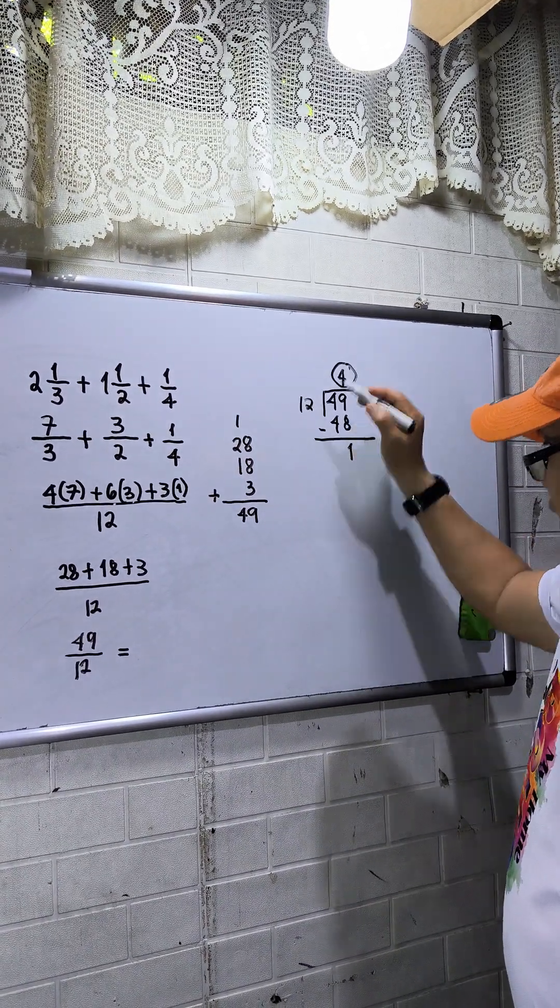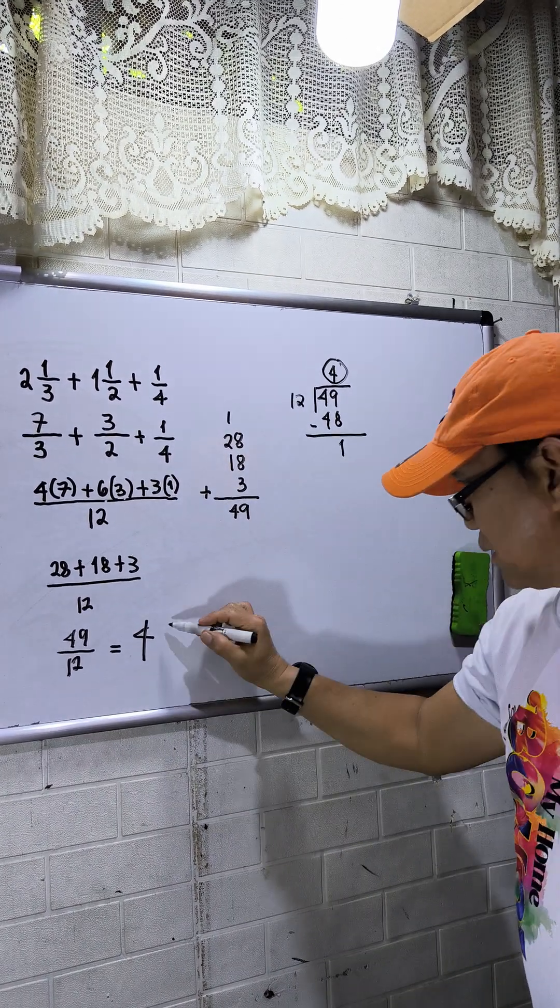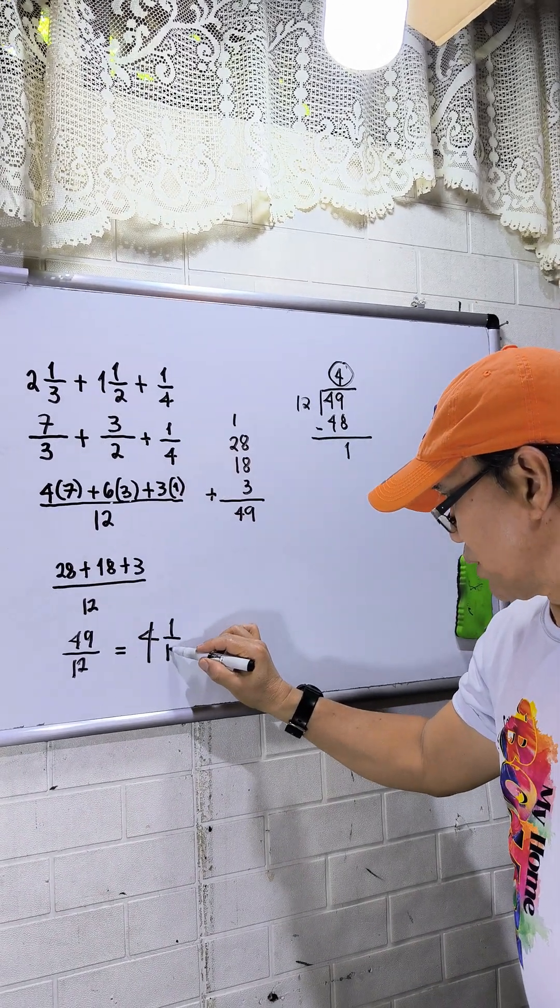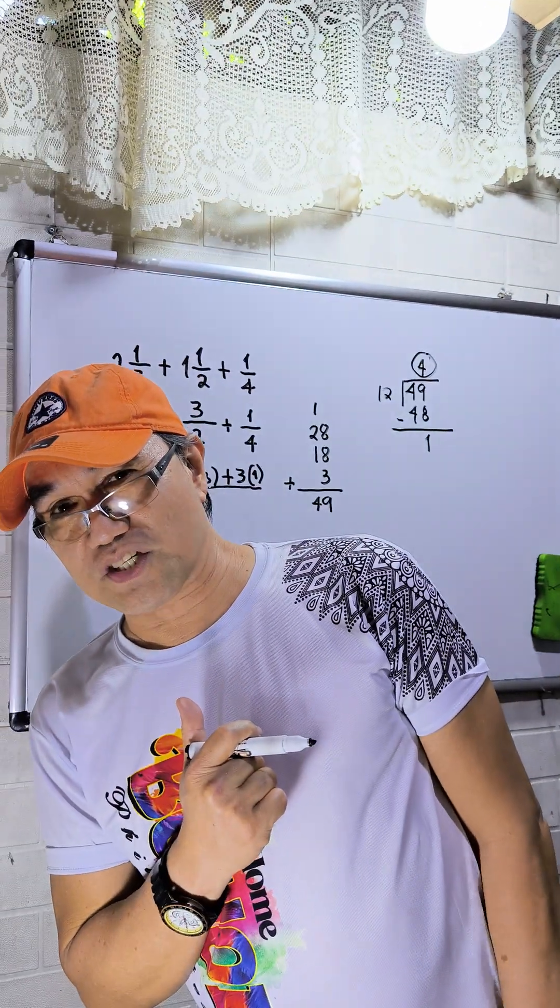Therefore my answer is, I will write first 4, then remainder I have 1 over 12. This is now my final answer. Thanks for watching.